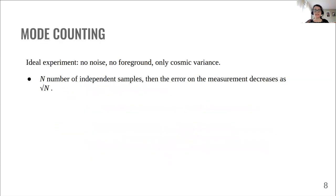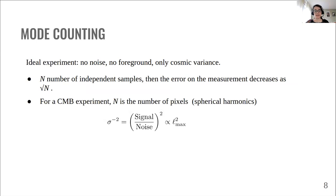Now, let's consider a simple scenario where we have an ideal experiment, meaning that it doesn't have noise nor foregrounds and the only limit to our measurement is good old cosmic variance. Then, if we have N independent samples, the error of the measurement decreases as the square root of N. In the CMB experiment, N is the number of pixels, which in spherical harmonics is given by the largest multipole you can measure, L_max. Here we find that the error decreases with the number of modes, L_max. Or equivalently, we find that the ratio between the signal and the noise squared is proportional to L_max squared.